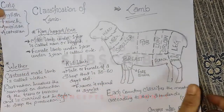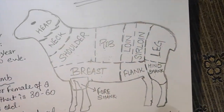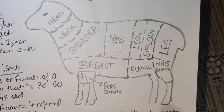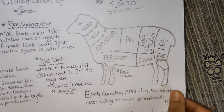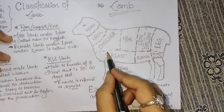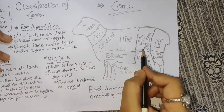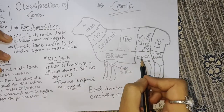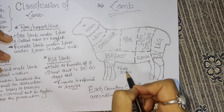You can see the cuts on the diagram. You can see the head, neck, shoulder, ribs, loin, chine loin, leg, hind shank, flank, breast, and foreshank.